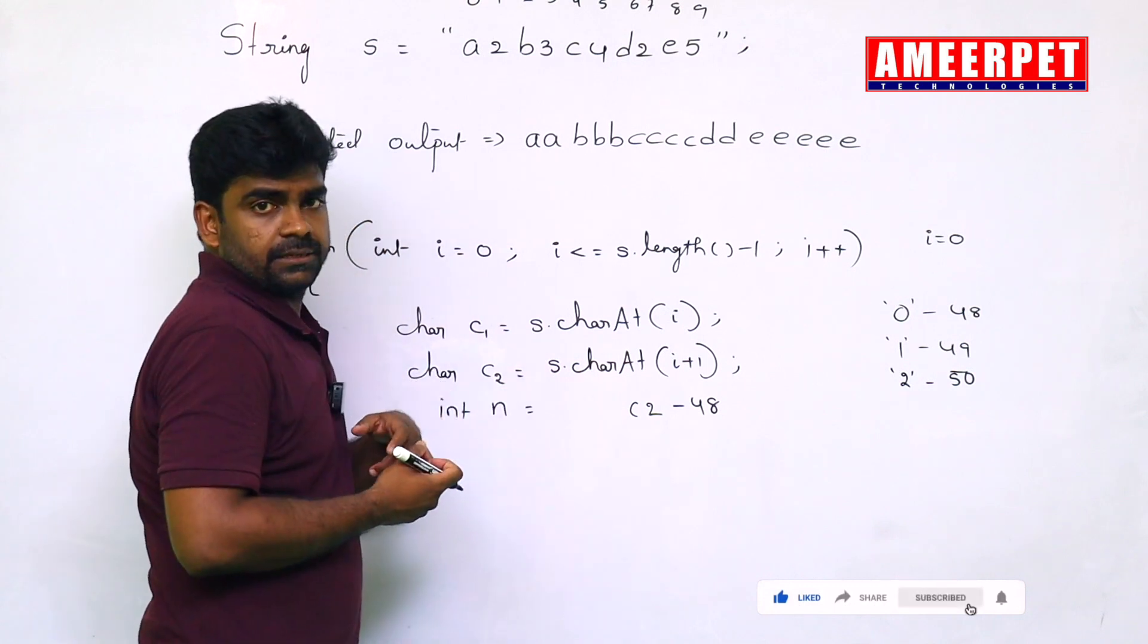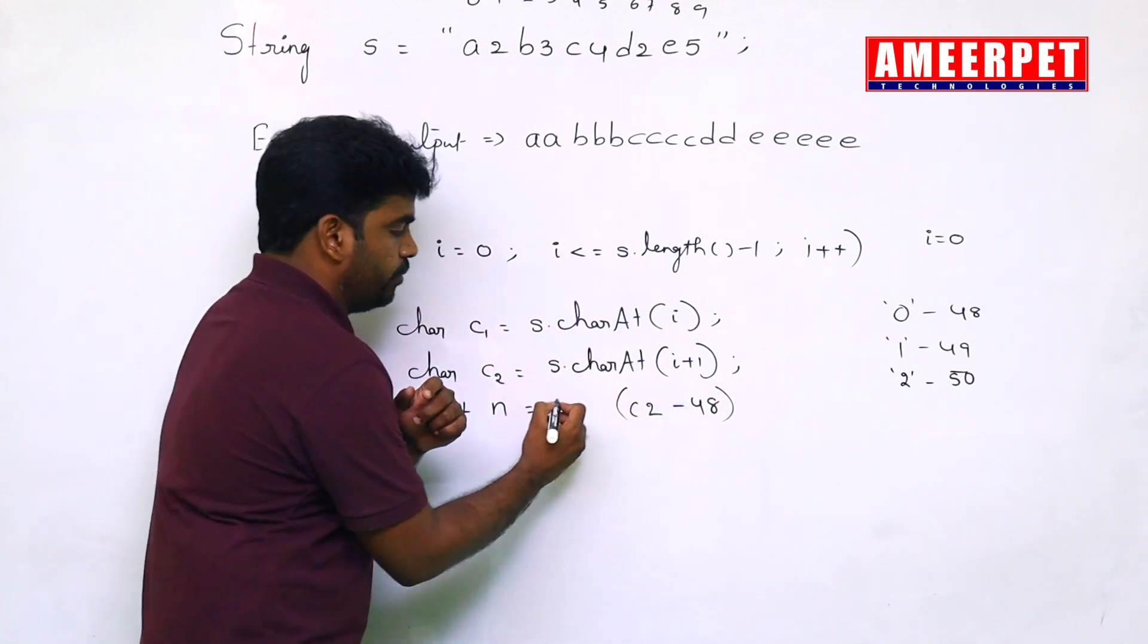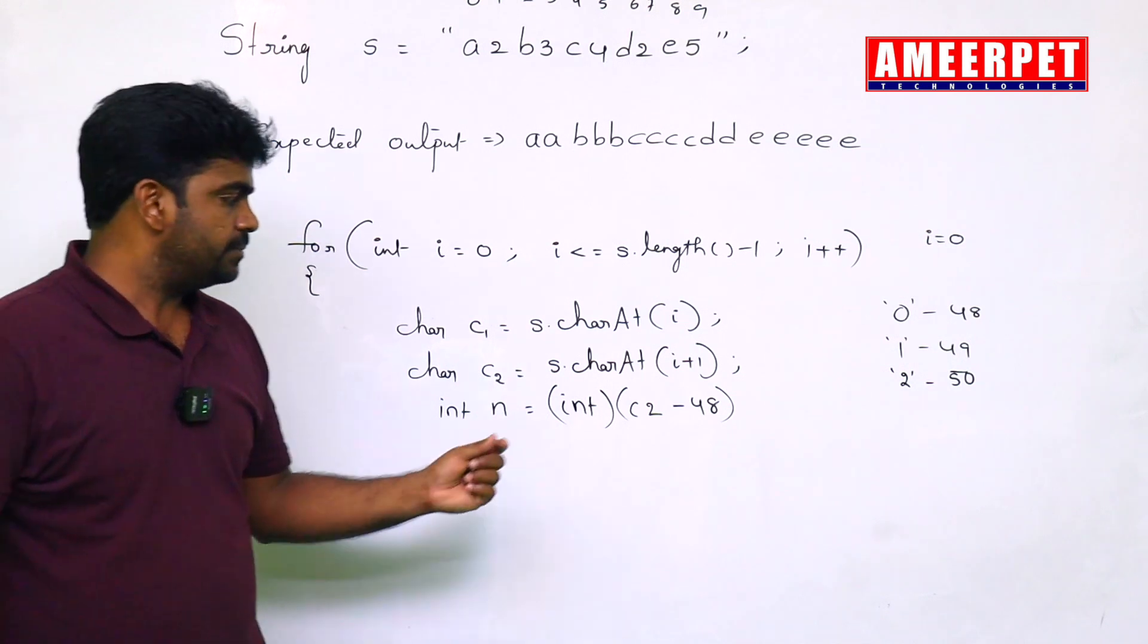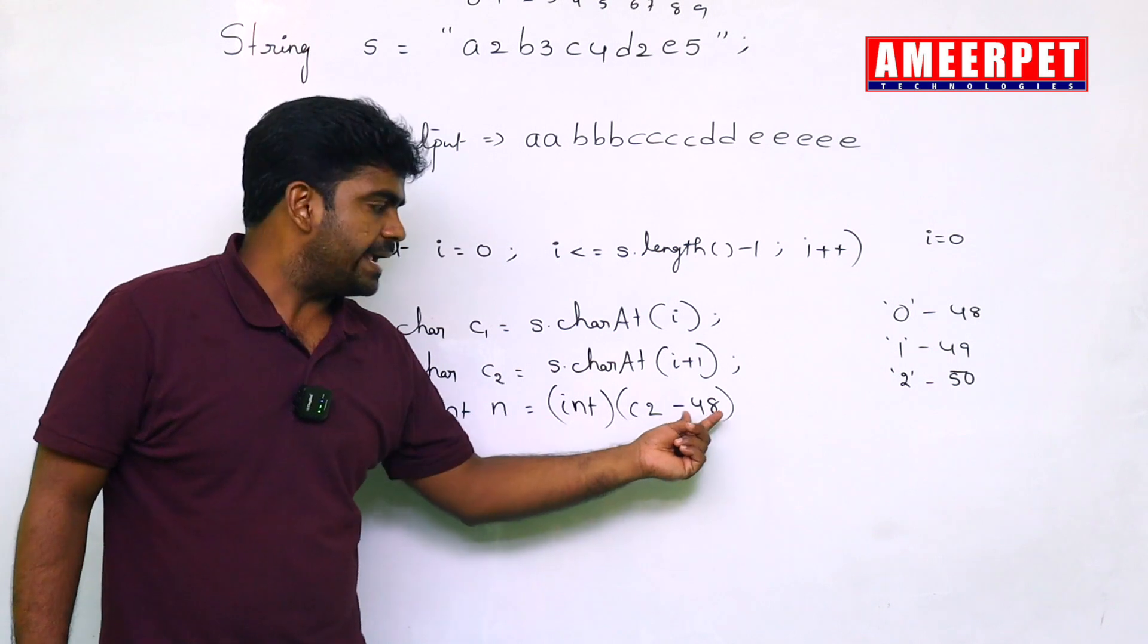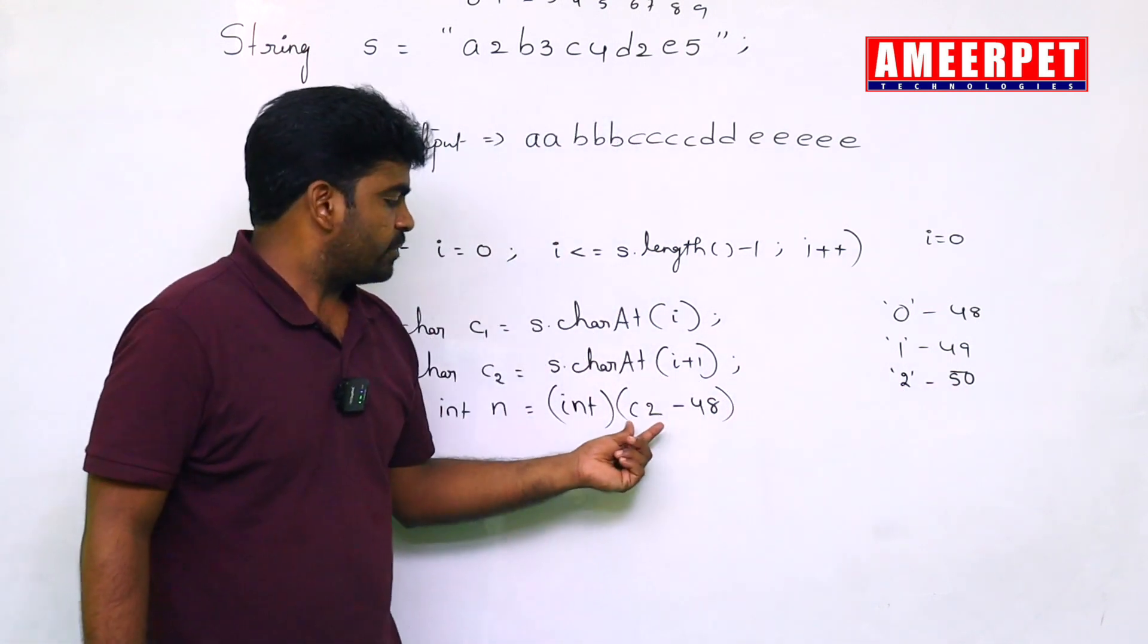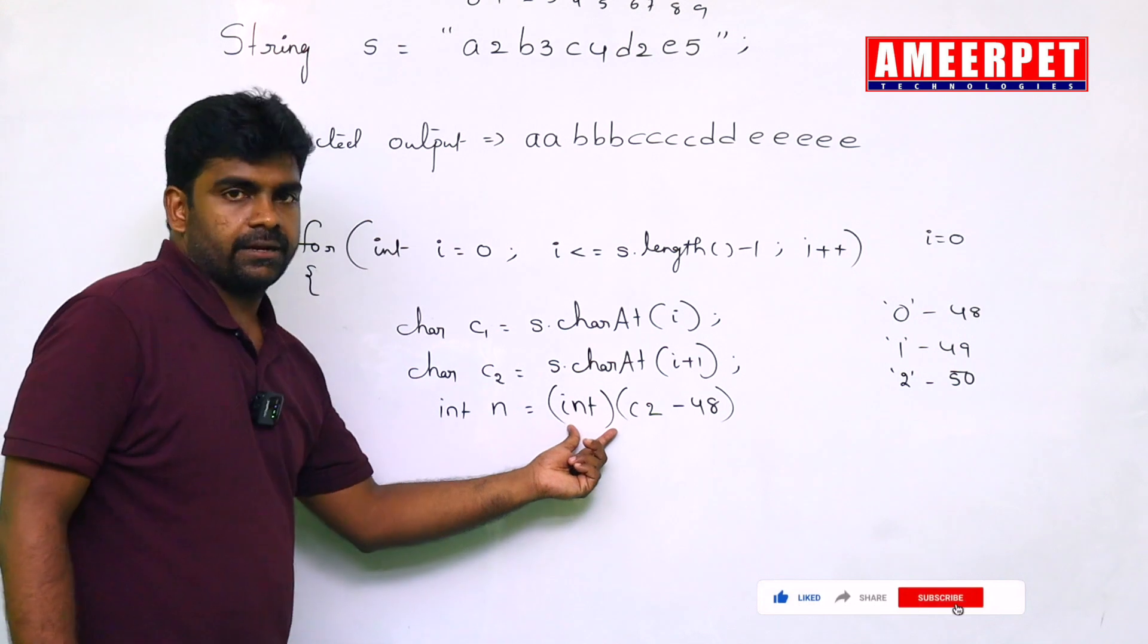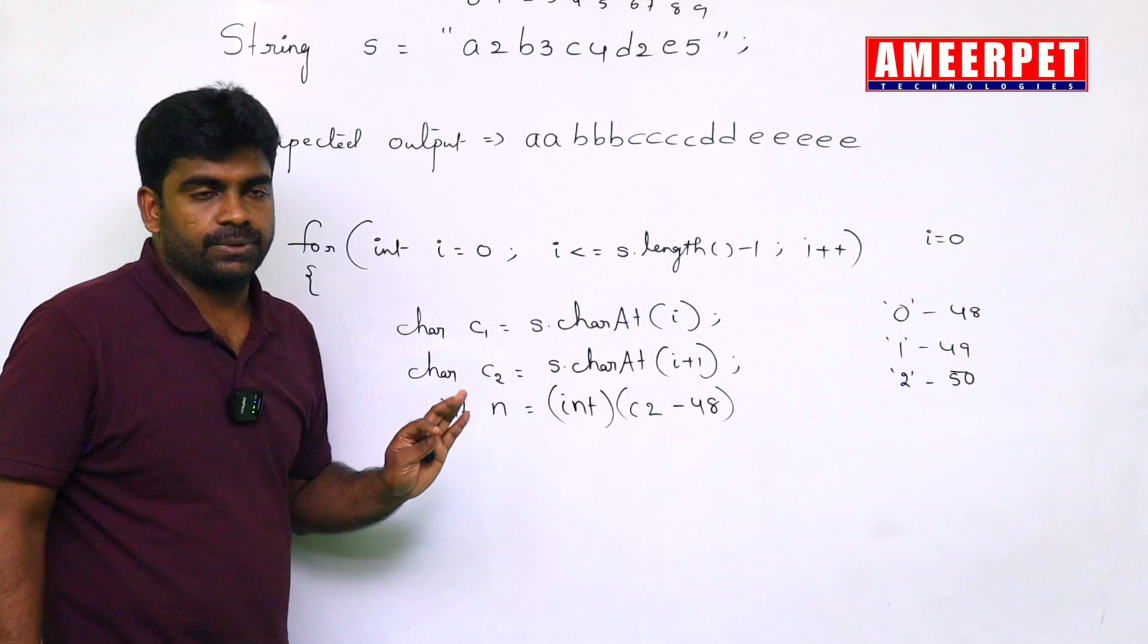Of course, directly it will convert, but more clearly if you want to know, simply we are doing like this, converting into integer typecasting. C2 contains the character. The character minus 48, actually character value 50 suppose, 50 minus 48 is 2. The 2 will store into int. Directly you can write, this conversion not required, but for more clarity I am writing this one.